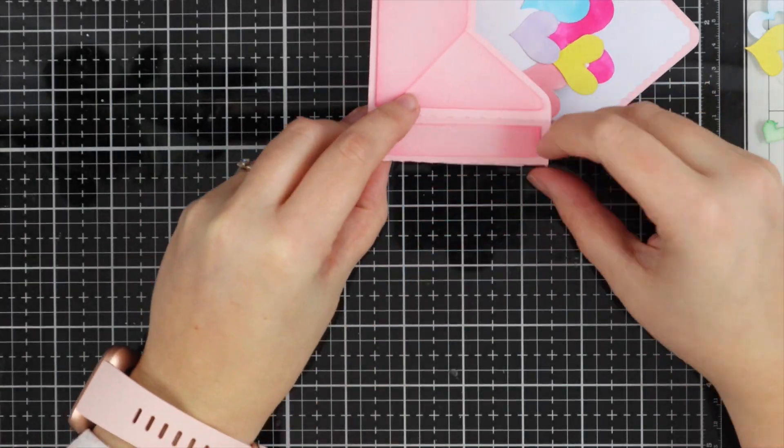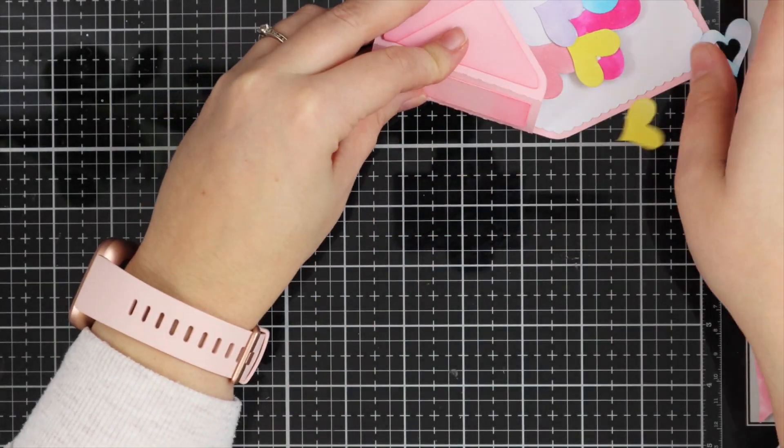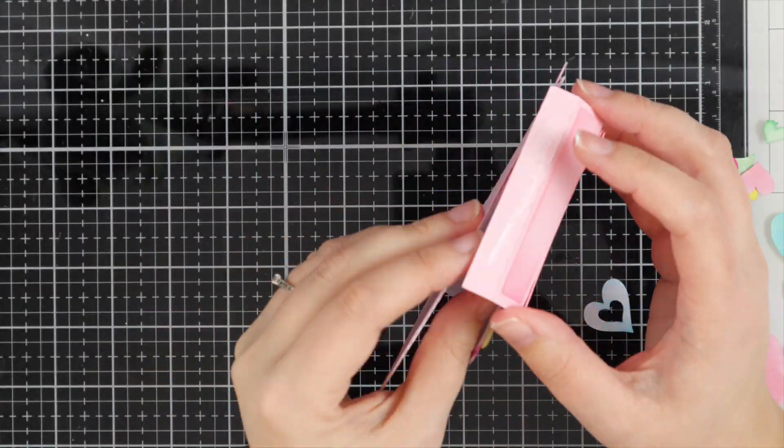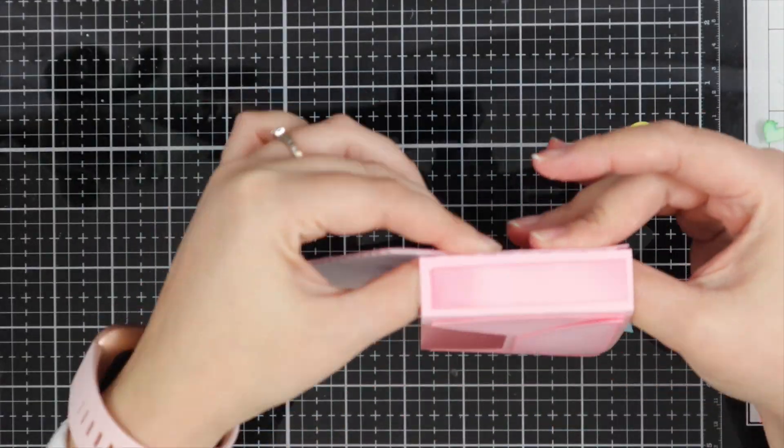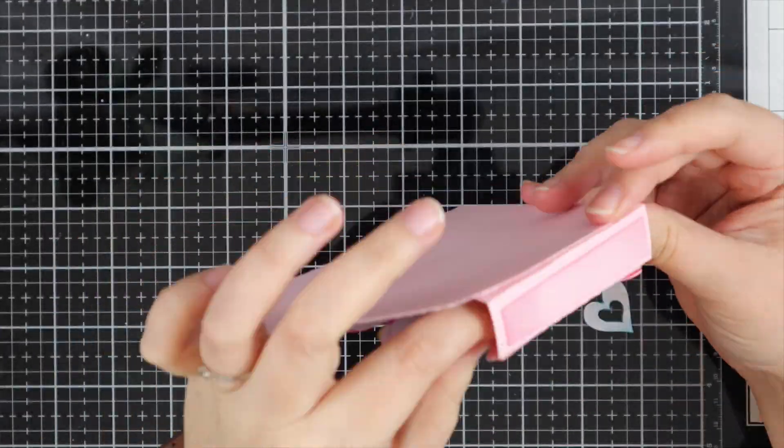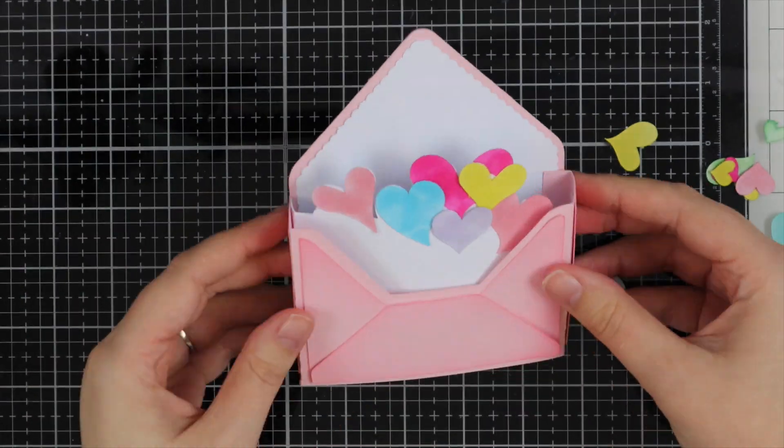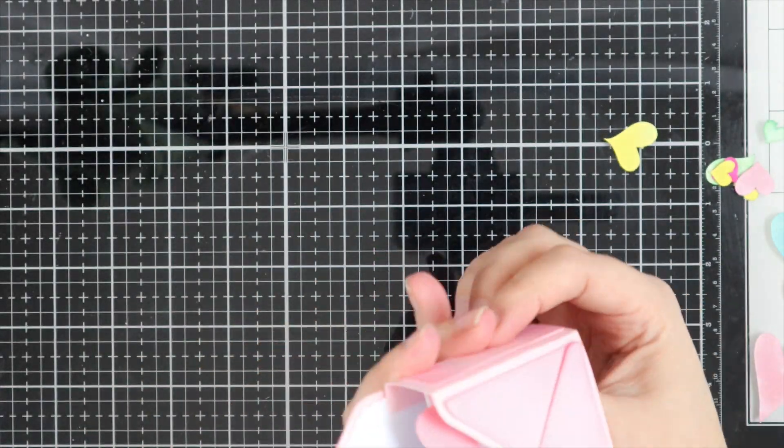So for this pink edge, you need to make sure that it's tucked into the actual box itself. So I'm just pinching the edges just to make sure it gets a nice firm grip. And then I've put my finger on the inside part just to adhere that flap back down because it did slip.